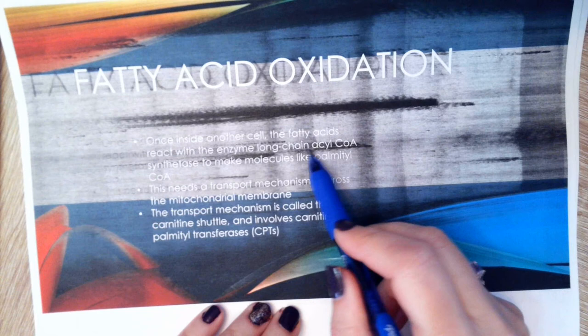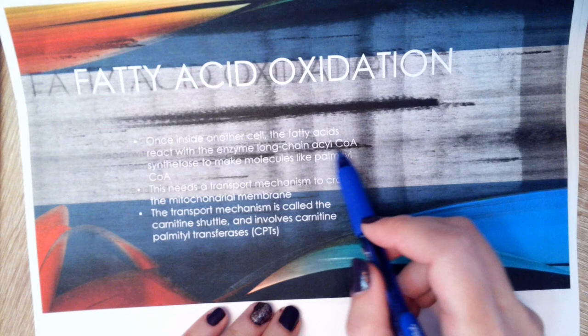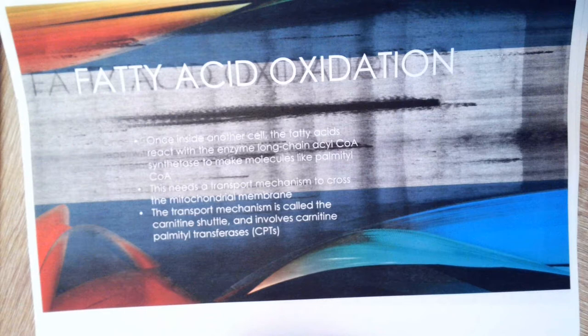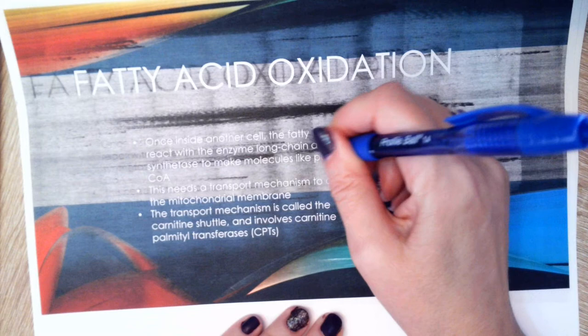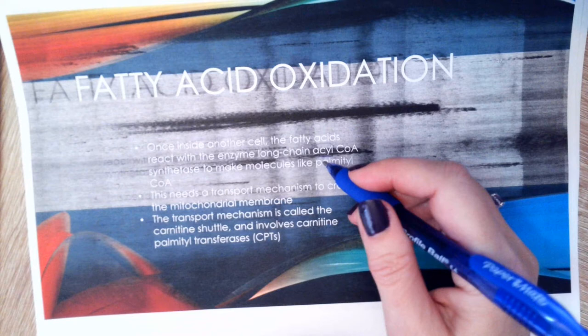It's important to note this is acyl-CoA, not acetyl-CoA — there's a difference between the two based on certain side groups on the molecule. Acetyl-CoA goes into the Krebs cycle, while acyl-CoA is an intermediary product of breaking down our fats that will eventually give us acetyl-CoA.